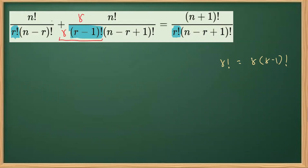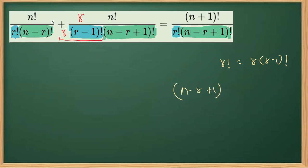Now, same way we need here (N minus one plus N minus R plus one) whole factorial. We have this on this part of the sum on the LHS, but not over here. So what we can do — I can write (N minus R plus one) whole factorial as (N minus R plus one) multiplied by something. I'm going to multiply and divide here with (N minus R plus one), and here also (N minus R plus one).